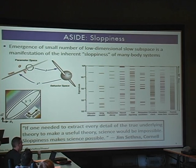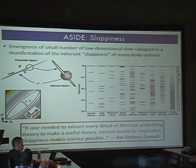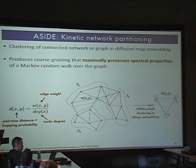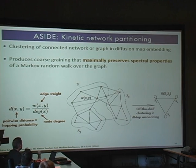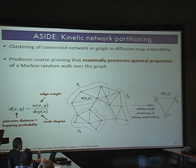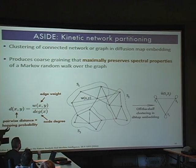I like Sethna's quote: 'If one needed to worry about every detail of the total theory to make a useful analysis, science would be impossible.' Sloppiness — i.e., emergent collective motions — is what makes science possible by yielding a massive simplification of the system. A third interpretation, relevant for this kinetic networks workshop, is kinetic network partitioning. A paper by Lafon and Lee from 2006 describes how: if you embed your system in a diffusion map embedding and then do off-the-shelf clustering such as k-means or agglomerative hierarchical, because you're clustering in a kinetically relevant space, you can show you're maximally preserving the spectral properties of your Markov walk — maximally preserving all kinetic properties in the optimal low-dimensional formulation.